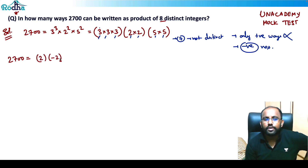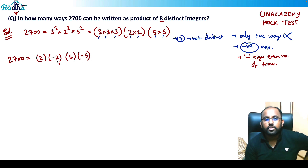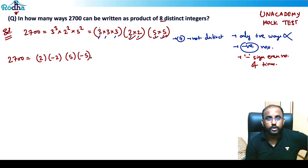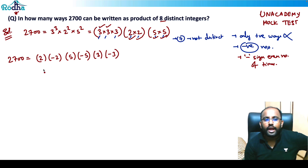If I take negative numbers, the negative sign must appear an even number of times so the product stays positive. So I can pair 2 with -2, and 5 with -5. Two pairs done. Then I pair 3 with -3 — that's two times three done. Now I have six distinct integers so far, but one factor of three is still left.